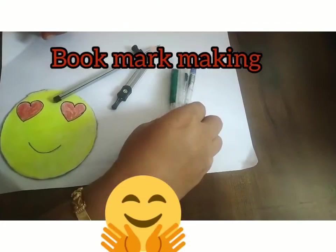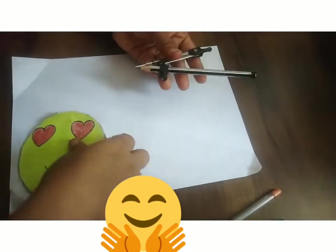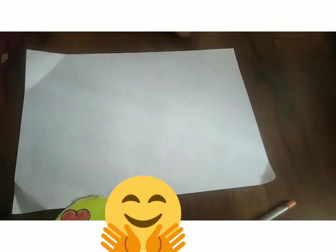Dear children, I have taken some glitter pans, a white colored paper, and a compass to make the circle. So, let's begin the activity.